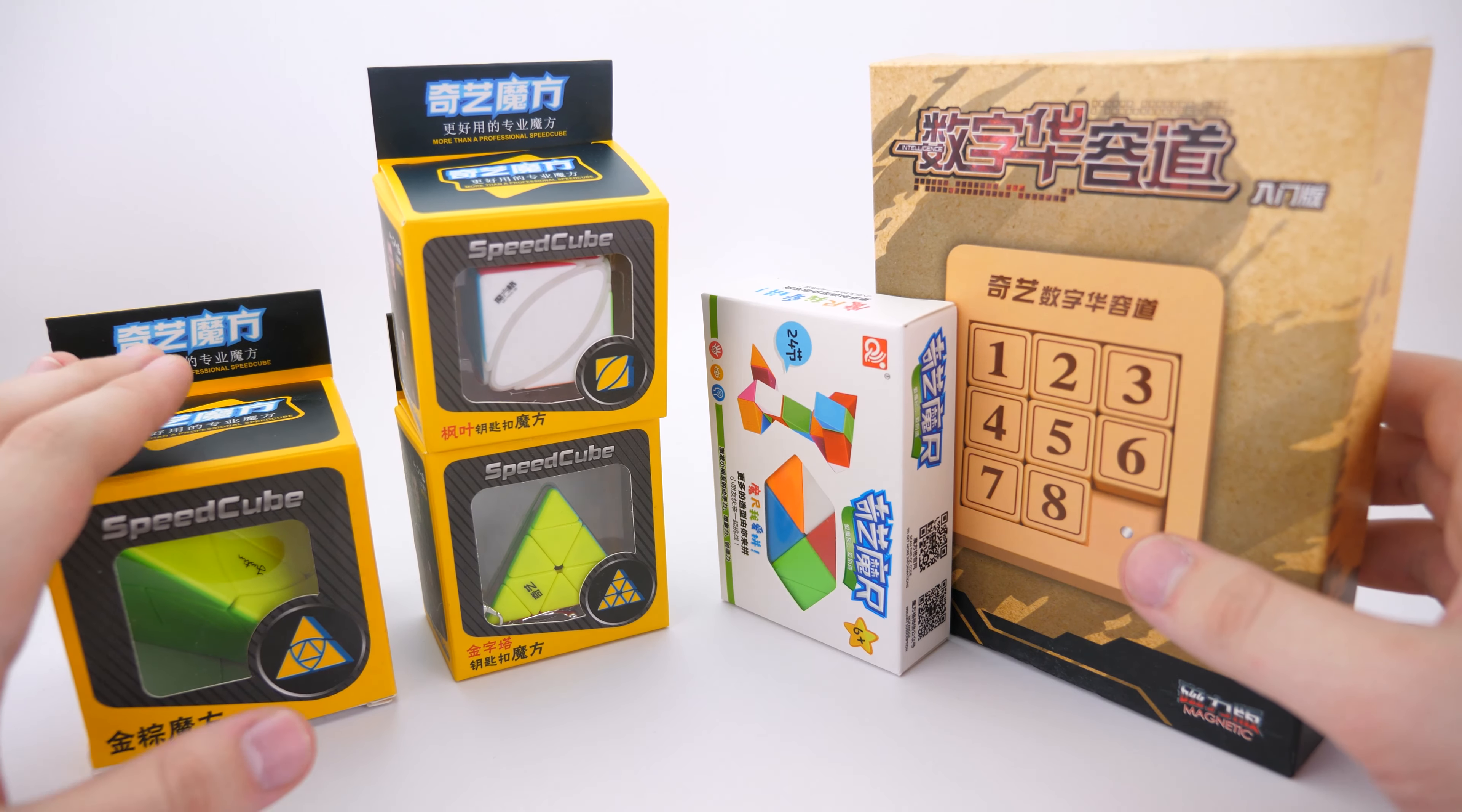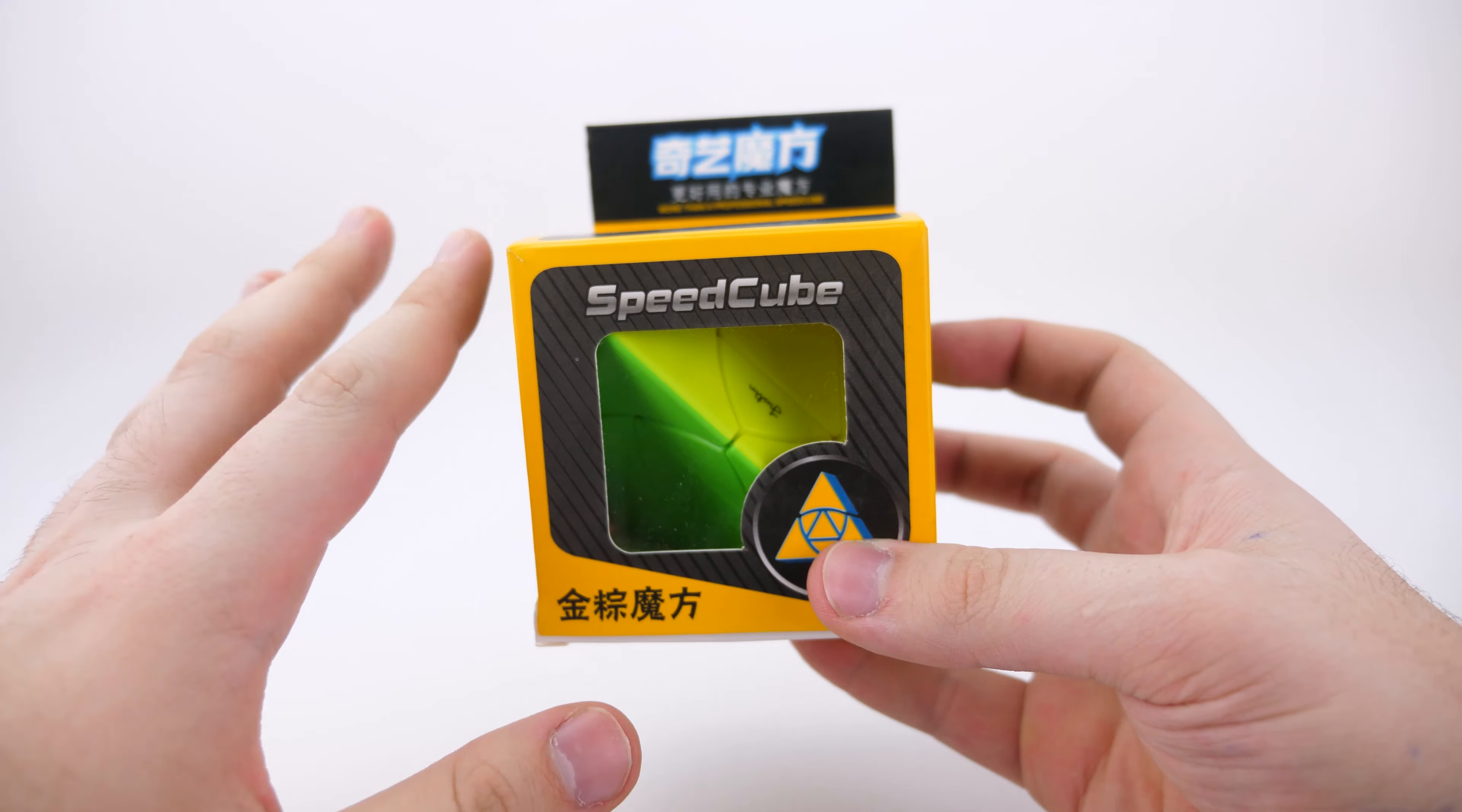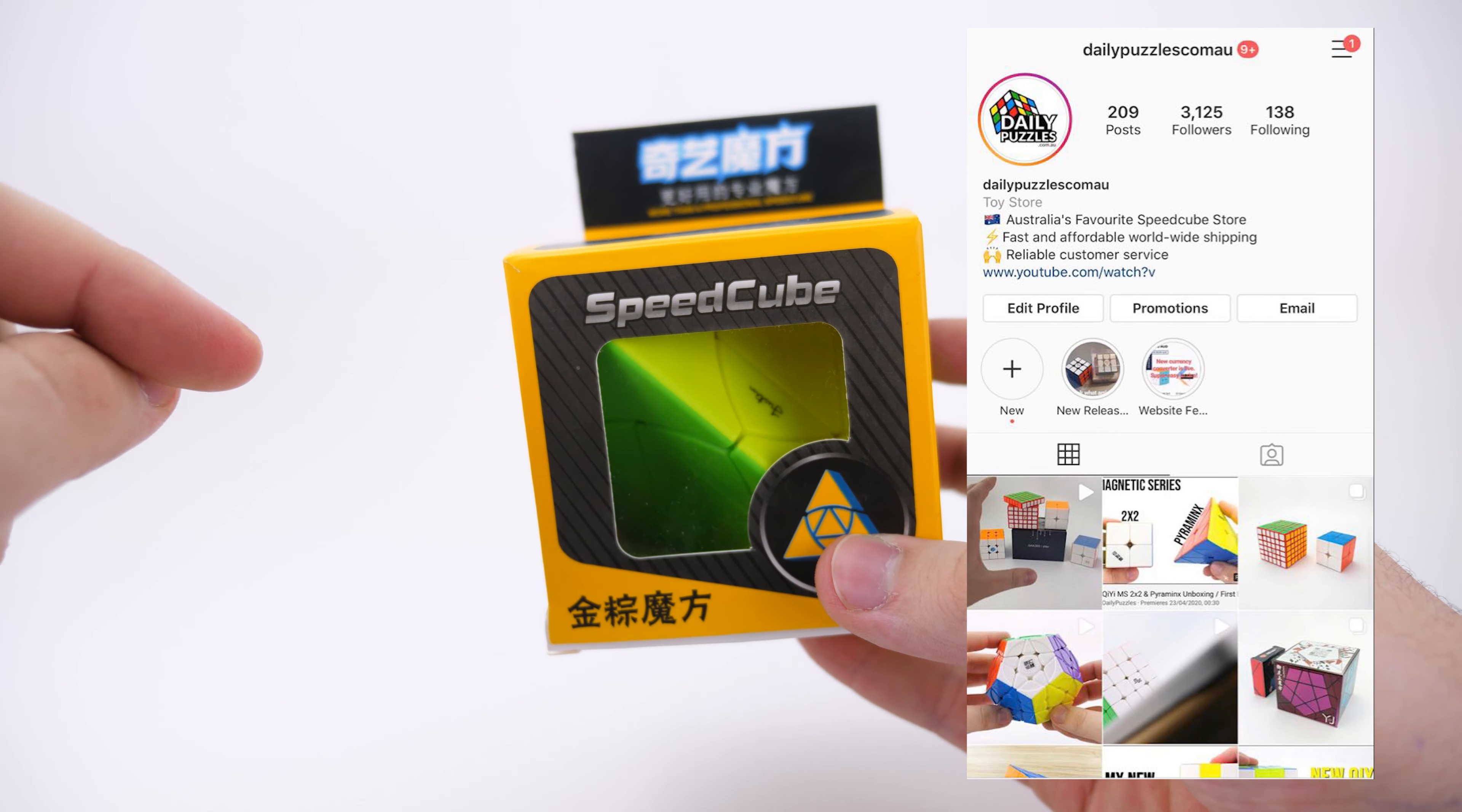So we have the Jumo cubes, we have a couple of keychains, a new snake, and a new magnetic sliding puzzle. So let's start with the Jumo cube. And just quickly before I get into the video guys, I just wanted to let you know we're doing a giveaway on our Instagram right now for 3,000 followers. So that will be in the link in the video description. If you want to enter that, go check it out.